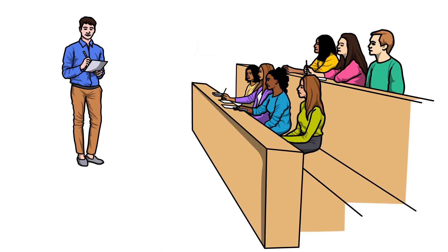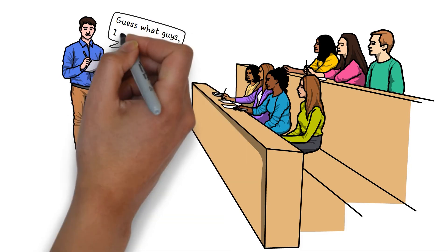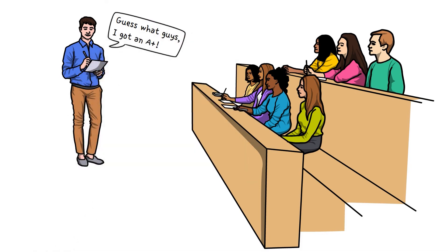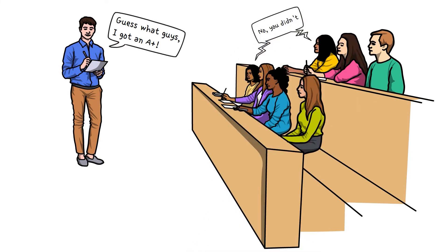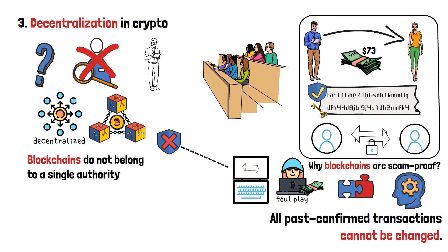The teacher announced your grade to the entire class of students. Now, if you, or any other student, would then go to claim that you've actually received an A+, no one would believe you. This is because there was an entire class of students who heard your actual grade announced. On a very fundamental level, this is how blockchains ensure that transactions happening on them are truthful and legitimate.